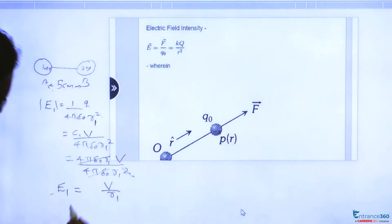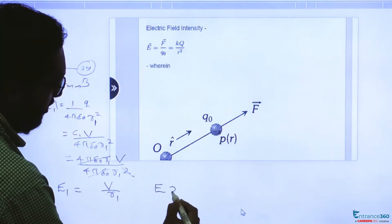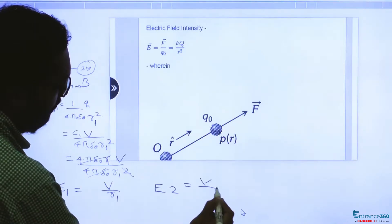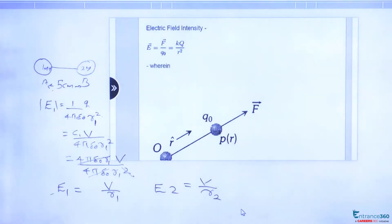Similarly E2 equal to V by r2, so E1 by E2 will be